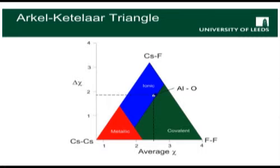This leads us to being able to locate aluminium oxide on the Ketelaar triangle. Aluminium has an electronegativity of 1.61, while oxygen has a value of 3.44. This gives an average of 2.53 and a difference of 1.83. Plotting these values on the triangle places it in the ionic portion of the Arkel-Ketelaar diagram, but very close to the covalent border. This makes sense because ionic aluminium oxide would contain Al³⁺ ions, which have a very large charge density and will be polarising, drawing electron density back from the oxide ions towards itself and giving polarised ionic bonds. So in conclusion, it would be better to describe the bonding in aluminium oxide as ionic, with a significant degree of covalency due to the polarising power of the Al³⁺ ion. We can determine this by considering the electronegativity values and using them to locate the interaction in the Arkel-Ketelaar triangle.